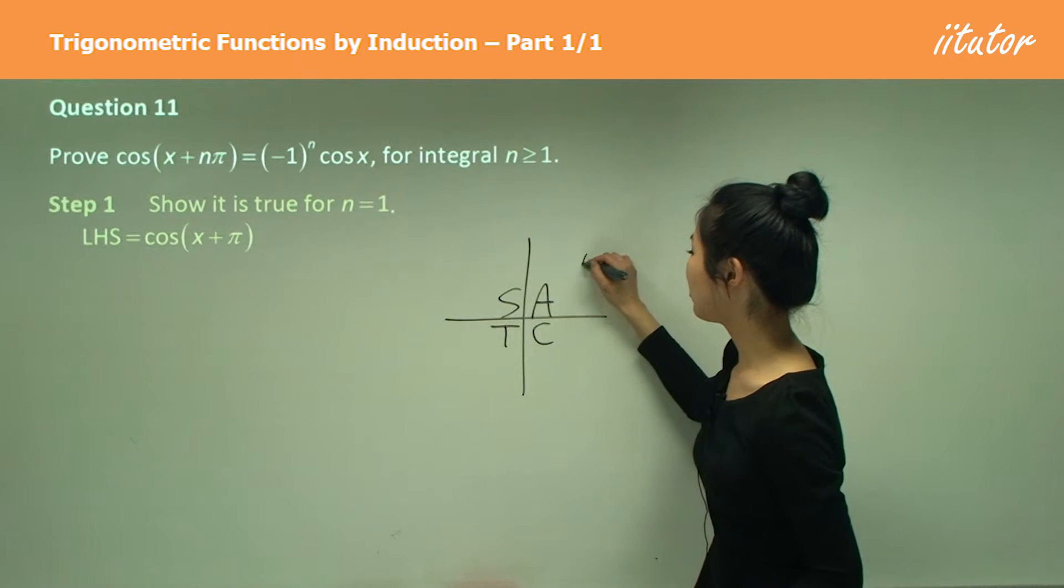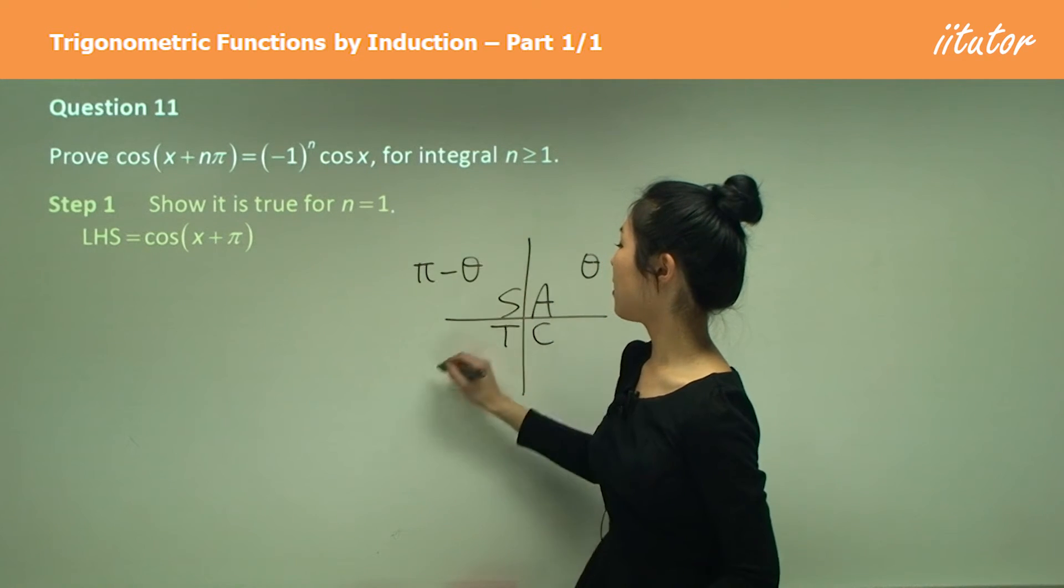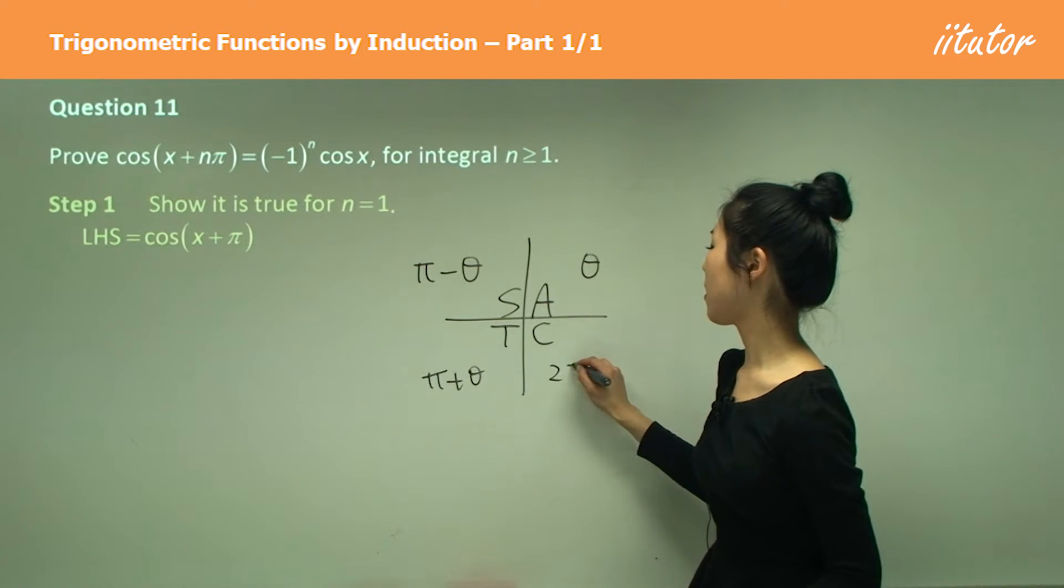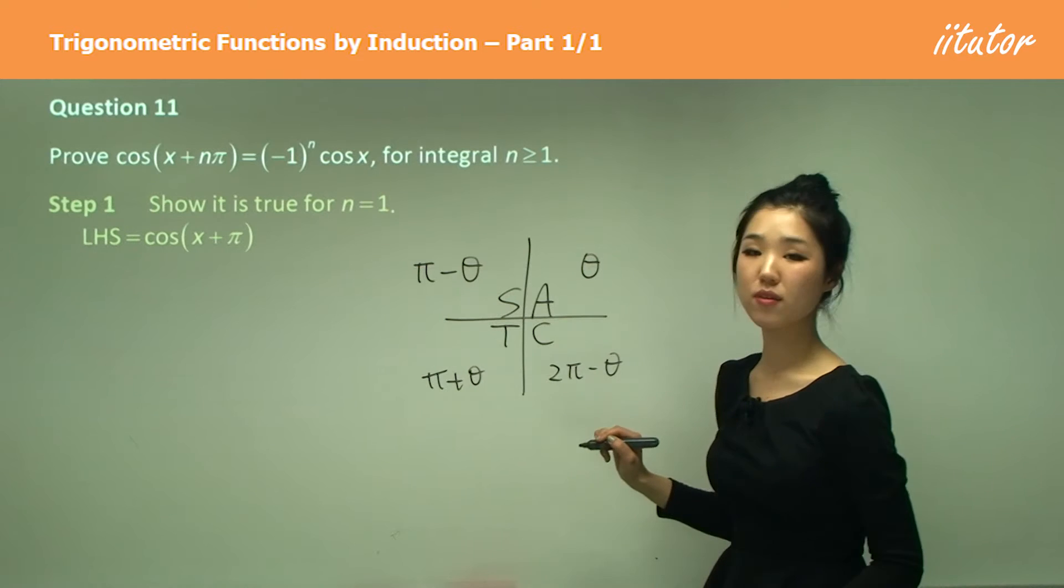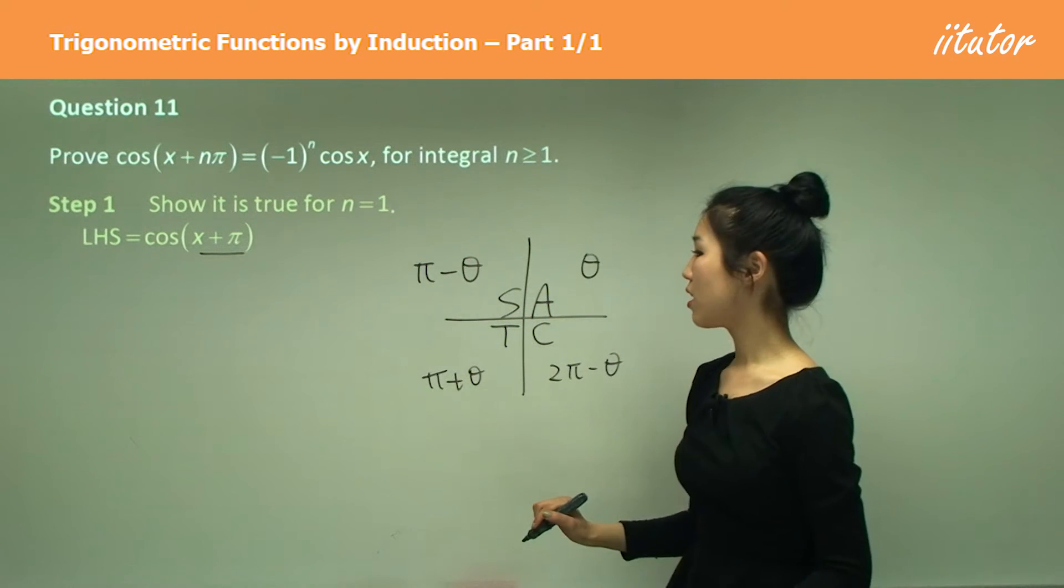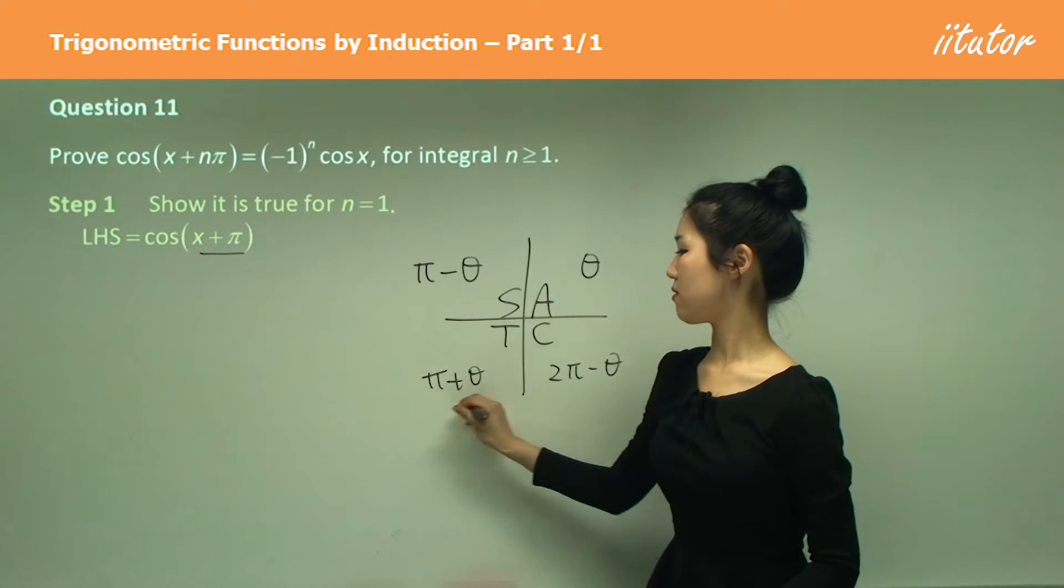Remember how we did this is just theta? This is pi minus theta. This is pi plus theta. This is 2 pi minus theta. Now which quadrant is x plus pi in? If say x is the theta, it's going to be this one here, isn't it?